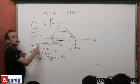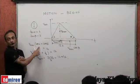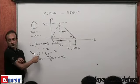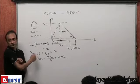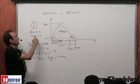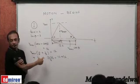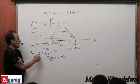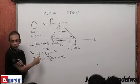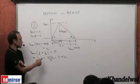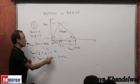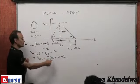If tan α is 4, then cot α is 1/4. If tan β is 2, then cot β is 1/2. Half plus one-fourth is three-fourths, so Vmax = 12 × 4/3 = 16 meters per second.